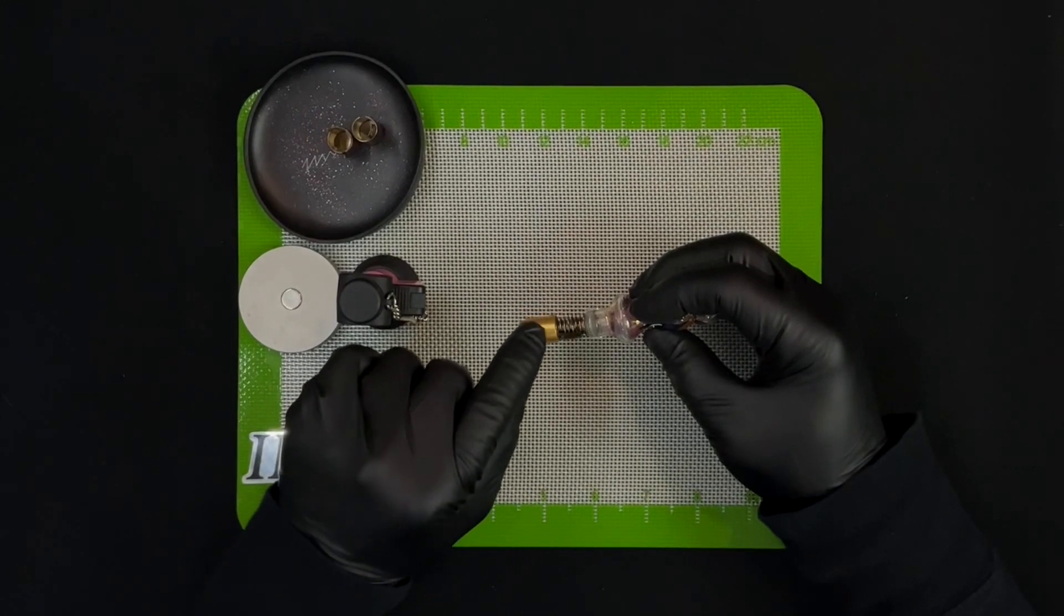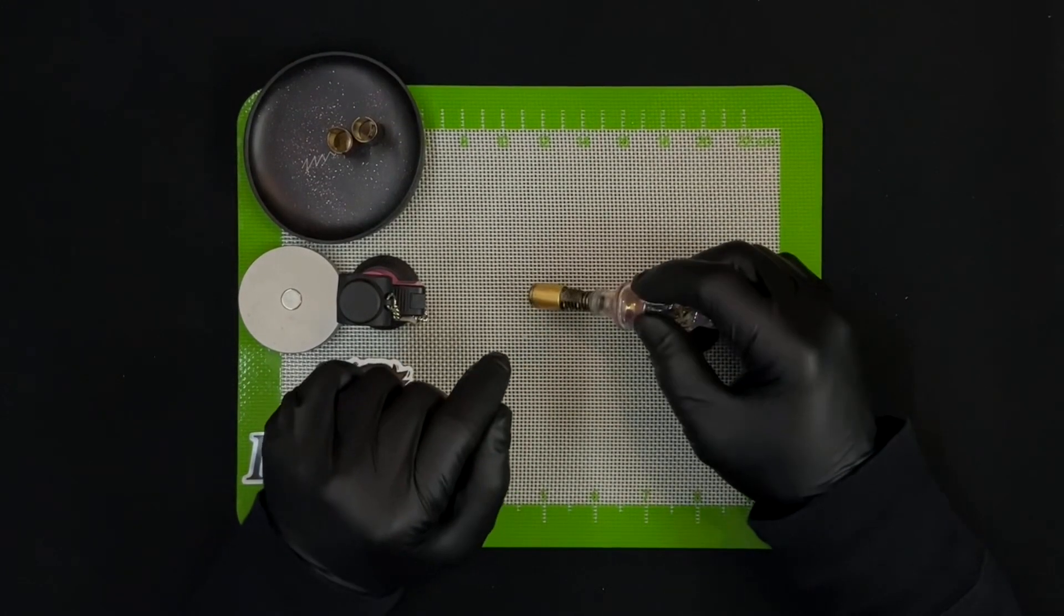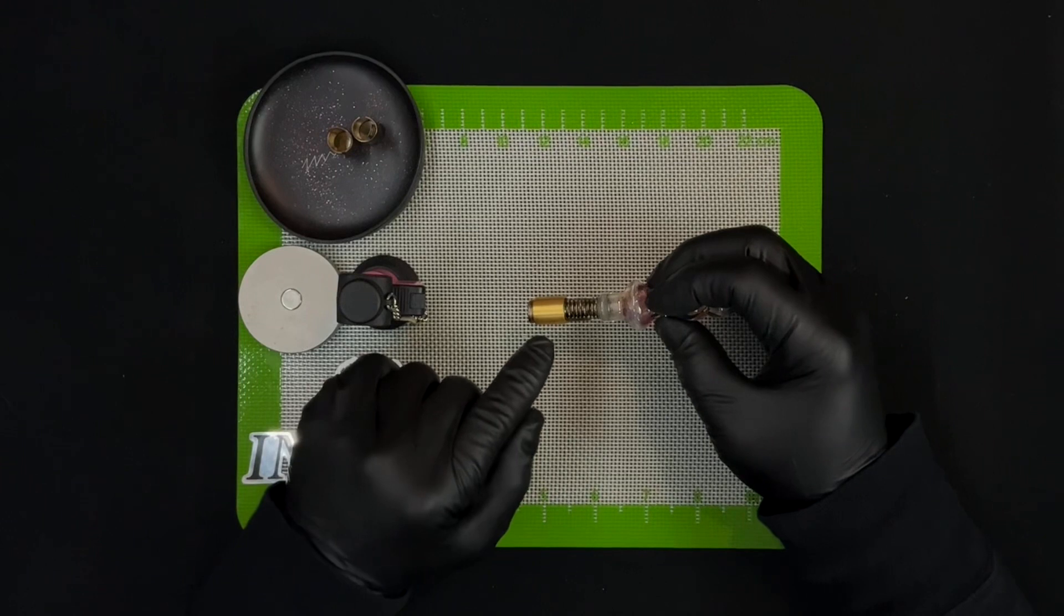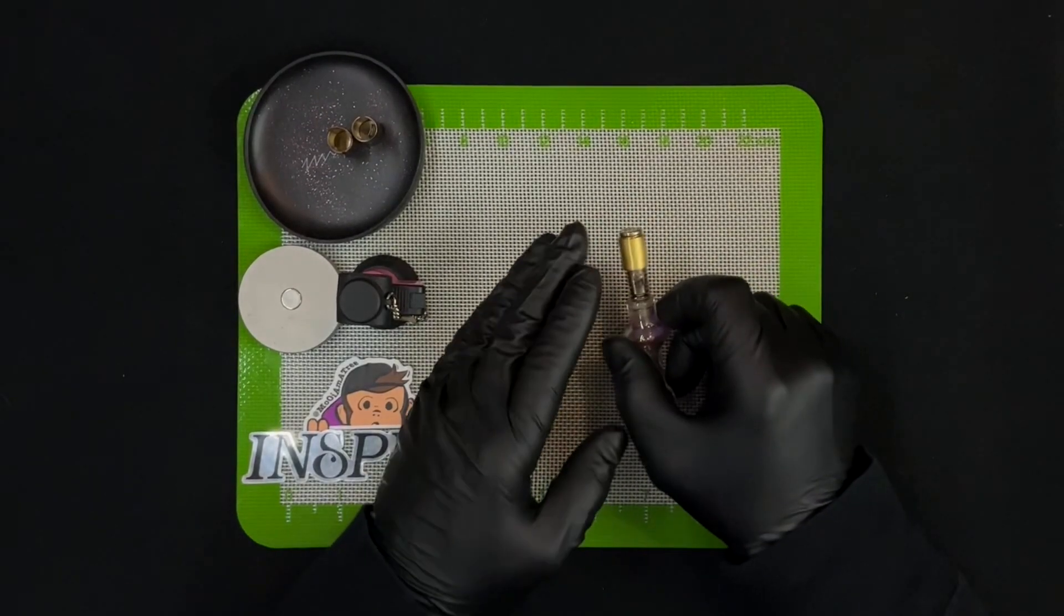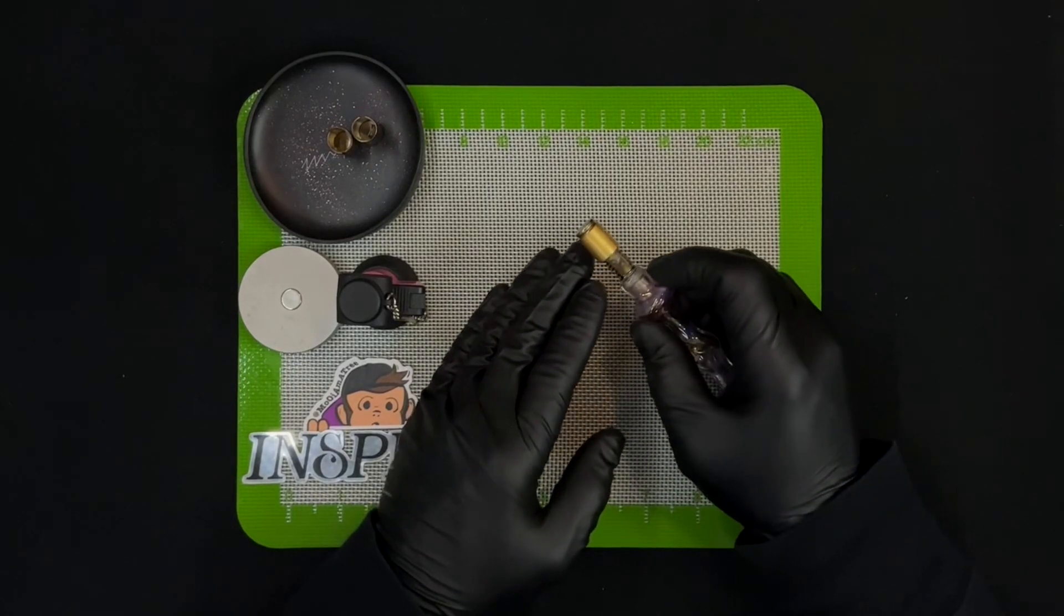One time I did get a little black dot over here from something that maybe I picked up on a table or something weird, and all I did was blast it with a little torch and it came right off.